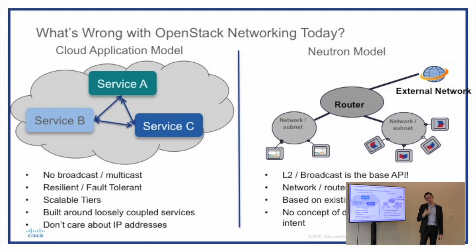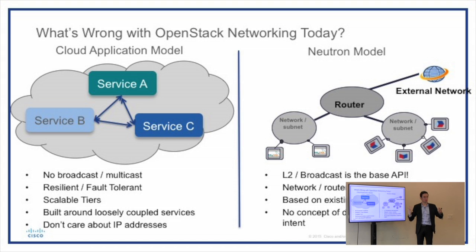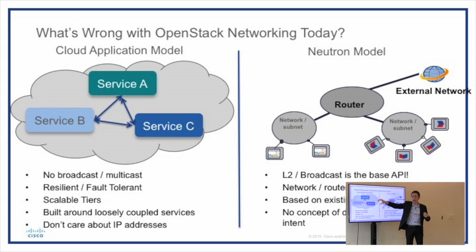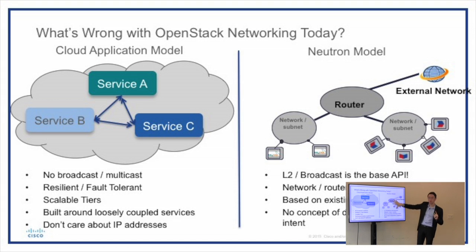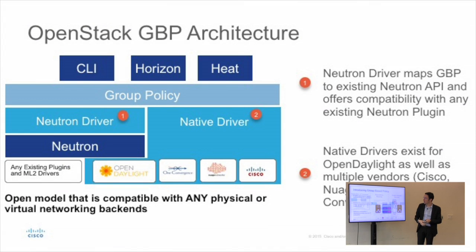Group Based Policy is going to give you basically an open source plugin that sits a tier higher than Neutron, giving a layer of abstraction where you're going to be able to configure OpenStack with this higher-level language. That abstraction layer — Group Based Policy — will translate that down to Neutron language for you.